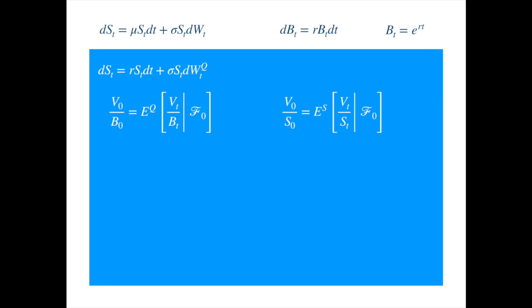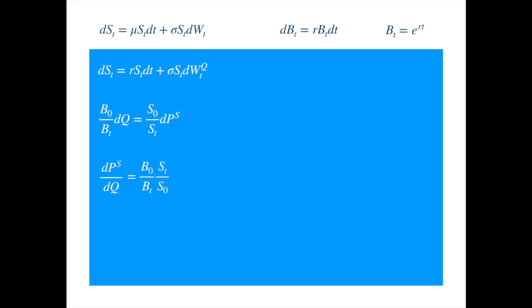Now, we take B0 to the right-hand side, inside the expectation to get. Analogously, we can take S0 inside the expectation on the right-hand side. Now, as both expressions represent the price of the same asset, and as these expressions hold for any asset, it means the terms inside the expectations must be equal. Now, we rearrange to get the derivative of the measure of P with respect to the measure Q. So we get.